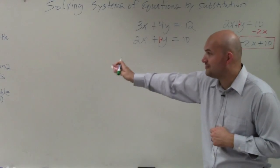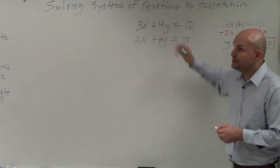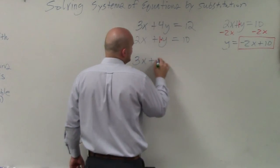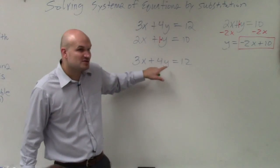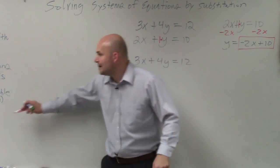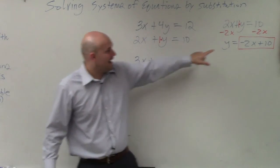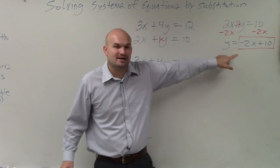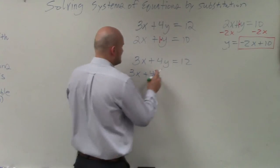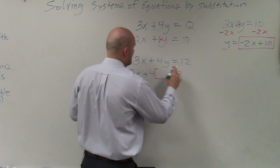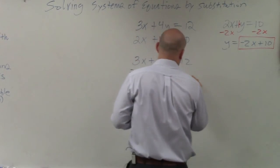So we're going to plug in the quantity the variable is equal to into the other equation for the same variable. So we go back to our original, to the other equation and say, where was y? Well, y is right here. So what we're going to do is we are going to replace the variable with the quantity. So instead of writing y, I'm going to rewrite it as the quantity. So it's going to be 3x plus 4 times my quantity, negative 2x plus 10, equals 12.